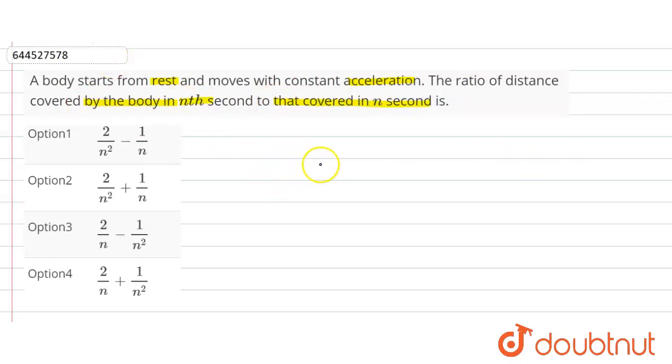So the distance travelled by the body in nth second, Sn, is equal to how much? We know Sn is equal to u plus a by 2 into 2n minus 1.